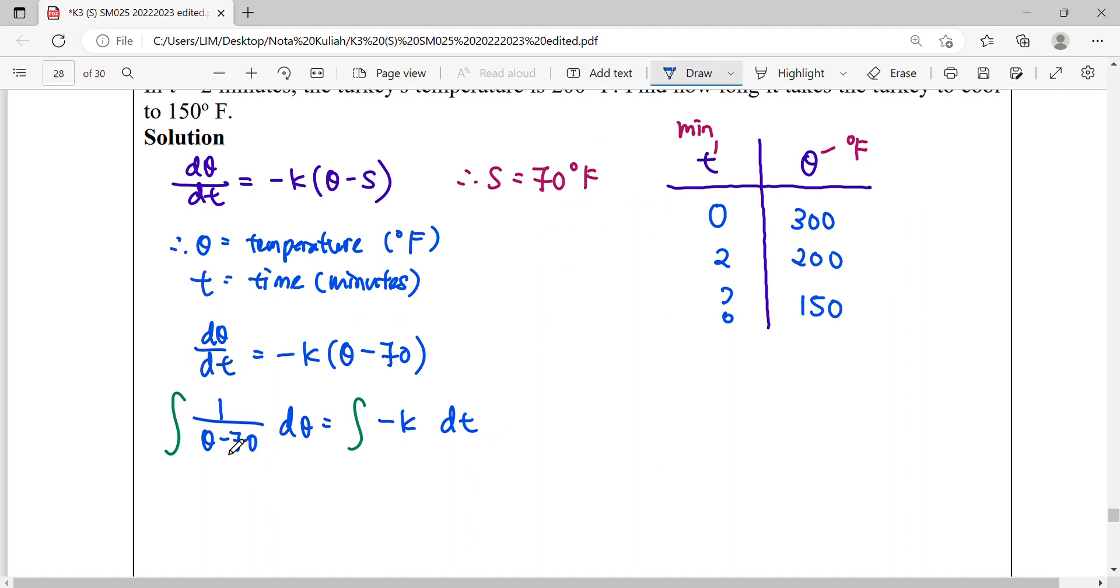Integrating this, the denominator is linear so this gives us ln(θ - 70), and the coefficient is 1 so dividing by 1 won't affect anything. Integrating the right hand side with respect to T gives -kt + C.